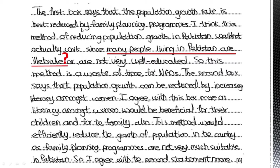The first box says: 'The population growth rate is best reduced by family planning programs.' That is View A — family planning programs. The student writes: 'I think this method of reducing population growth in Pakistan could not actually work since many people living in Pakistan are illiterate or are not very well educated, so this method is a waste of time for NGOs.' This is the first point they wrote. If we analyze it, they have a point — many people living in Pakistan are illiterate — but now develop it further. Ask: why does illiteracy make it difficult for family planning programs?